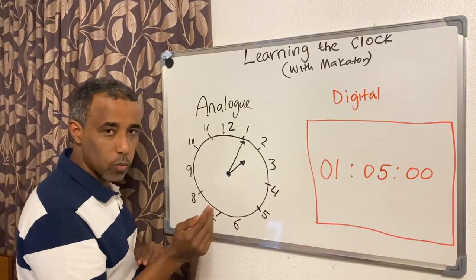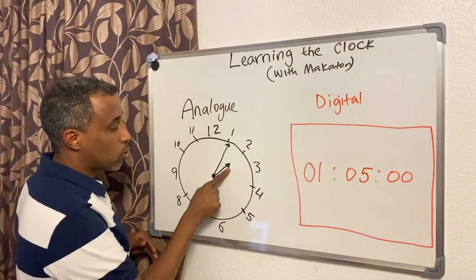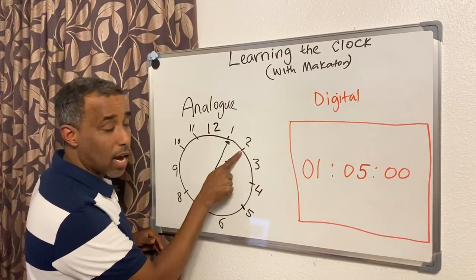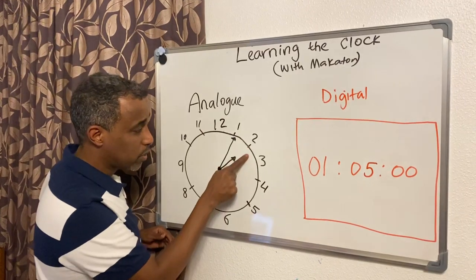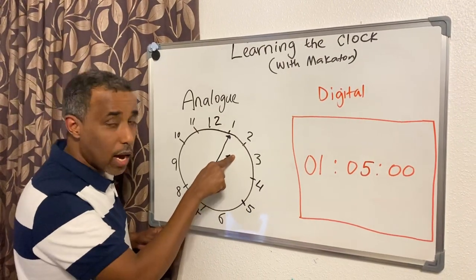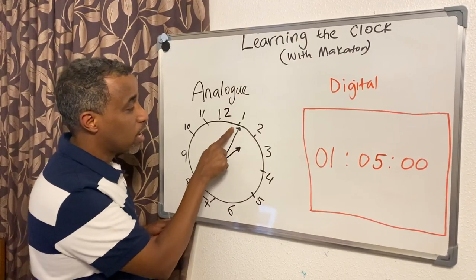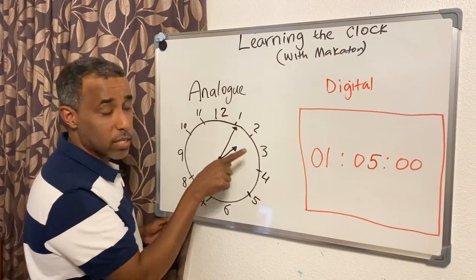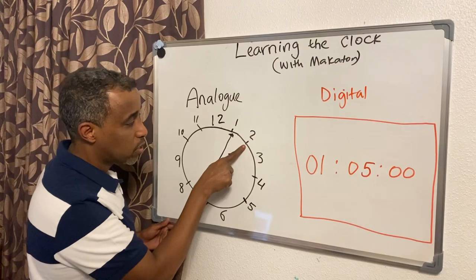The short hand tells us the hour whenever it's pointing to these numbers. The long hand tells us minutes whenever it moves around. It goes one, two, three, four, five minutes.